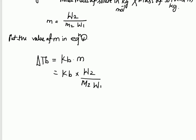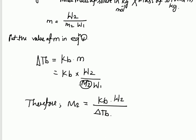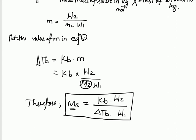Hence we can calculate the molar mass of solute. Therefore M2 equals Kb times W2 divided by delta Tb times W1. The experimental method to determine the molecular mass of the non-volatile solute by determining the boiling point of the pure solvent and the solution of known concentration is called ebullioscopy. This formula allows us to calculate the molar mass of the solute by determining the elevation in boiling point.